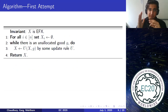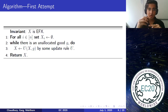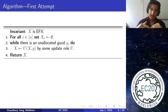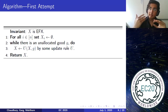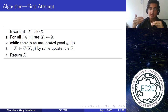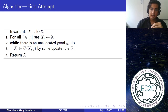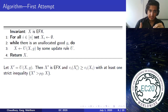Let me briefly sketch what a constructive proof looks like. We maintain a partial EFX allocation — meaning not all goods are allocated. As long as there is some unallocated good G, we transform this partial allocation into another partial EFX allocation. Our goal is to never revisit a partial EFX allocation more than once. If we can guarantee this, then at some point we will reach a complete EFX allocation. This is captured by an update rule transforming one partial EFX allocation to another.